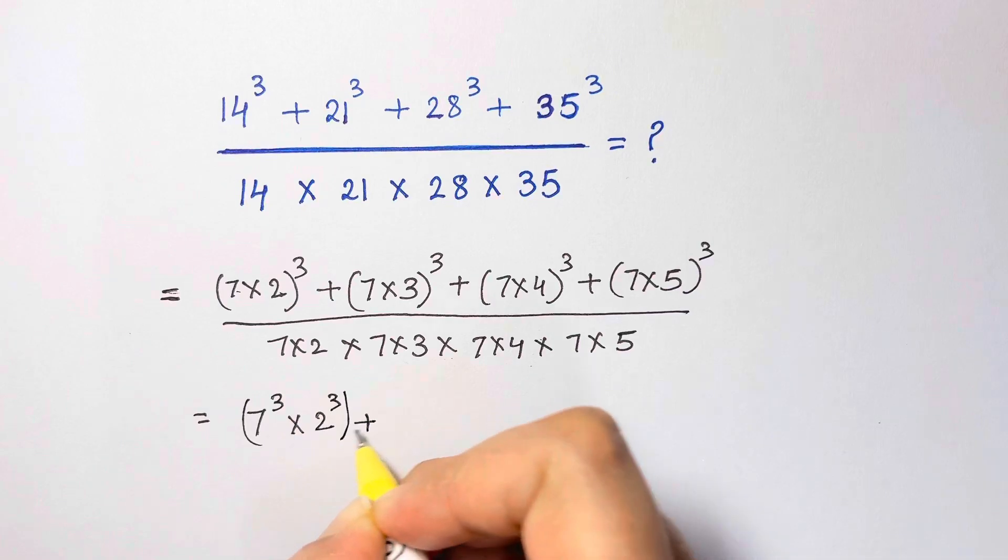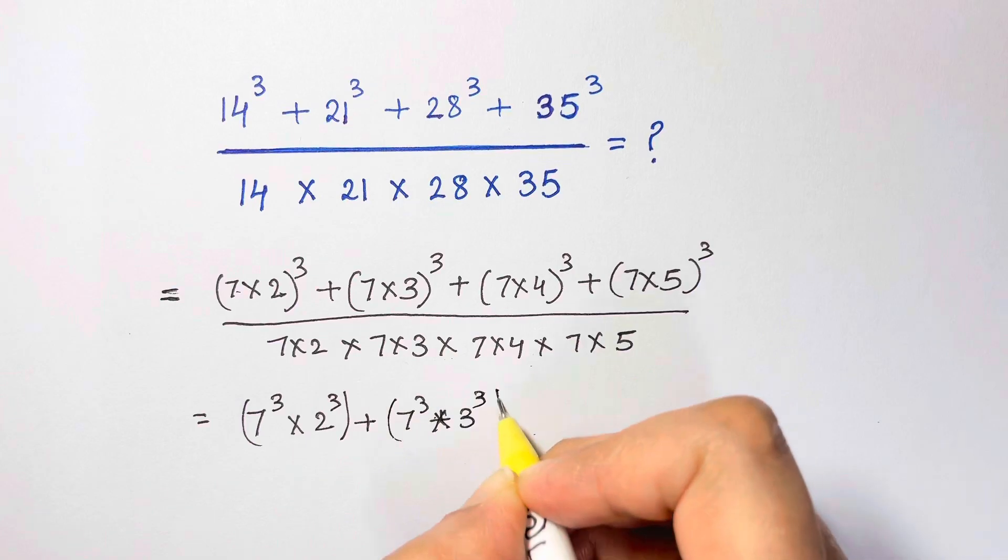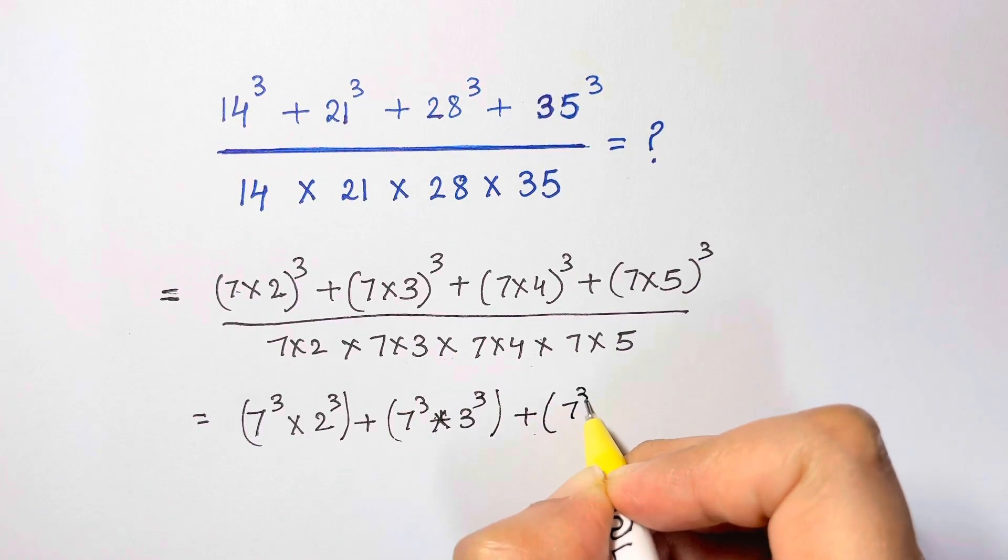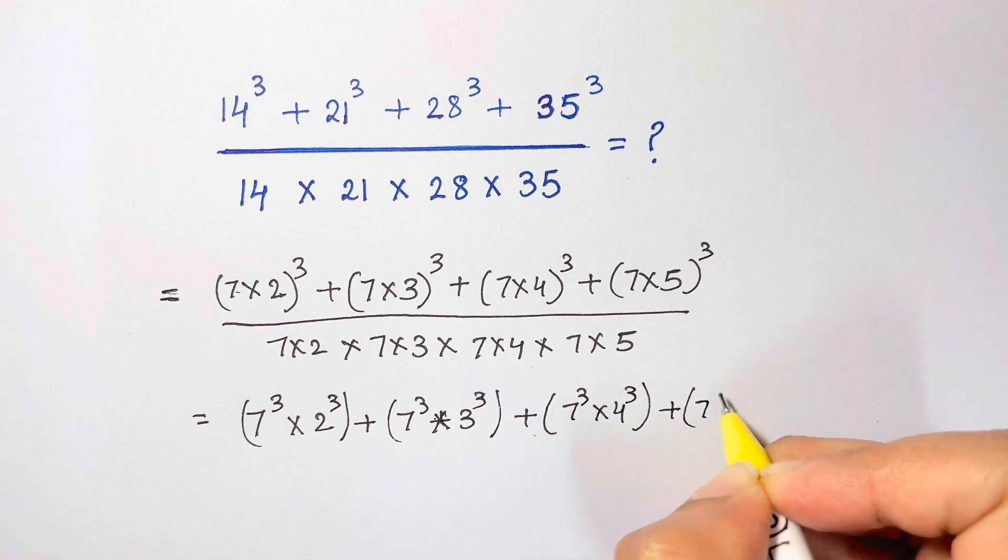Plus we have 7 cube times 3 cube, plus 7 cube times 4 cube, plus 7 cube times 5 cube.